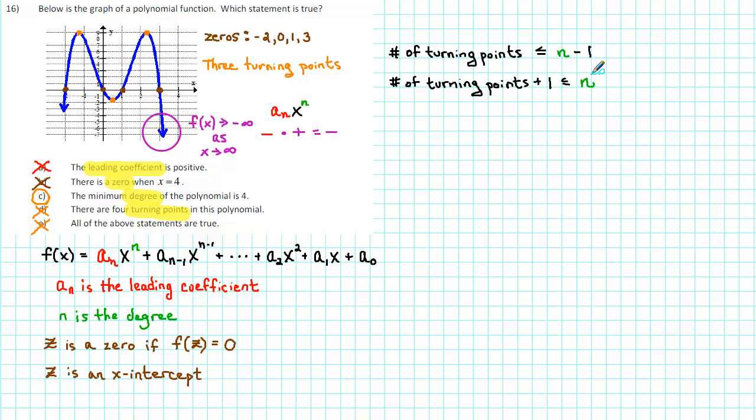We find that the number of turning points plus one must be less than or equal to n. In other words, the degree must be at least one more than the number of turning points. We found that there were three turning points. So that tells us that the degree has to be at least three plus one or four. The minimum degree of the polynomial is four.